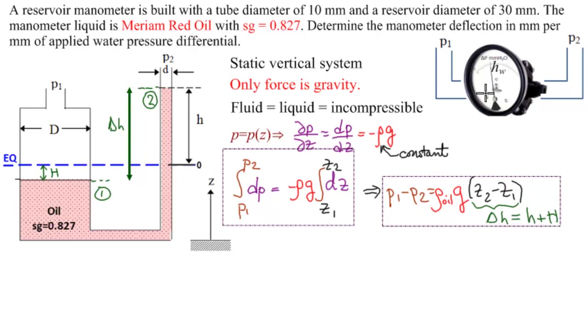Now let's look at our manometer here. We have p1 minus p2 equals rho water in this case times g times hw. hw is in millimeters of applied water pressure differential. This here, manometer deflection in millimeters, is h. As we said, we are looking for h divided by hw. This is what we want to find.